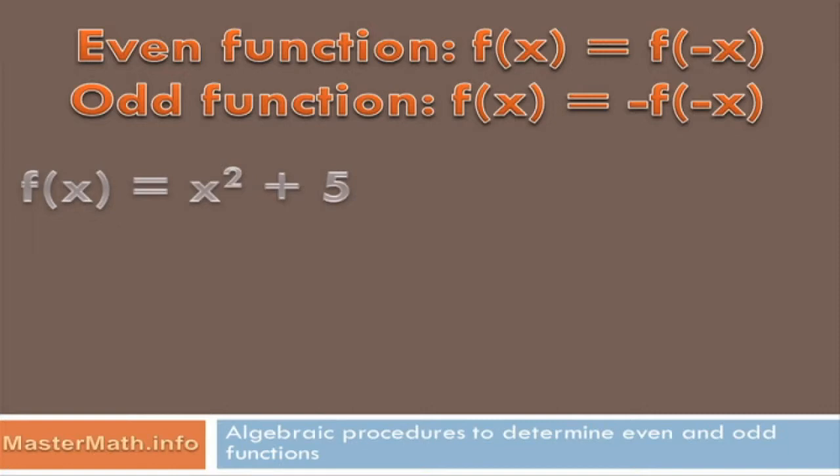Let's look at some examples. If I've got the function of x equals x squared plus 5, and I want to determine if it's odd or even, I'm going to substitute minus x for x.